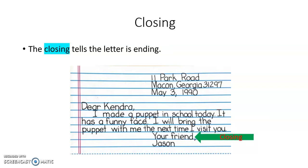The closing tells you the letter is ending. If you look at this letter, it says 'Your friend,' — the closing is a signal that the letter is ending. A comma always goes after your closing, so 'Your friend,' — that comma is very important.